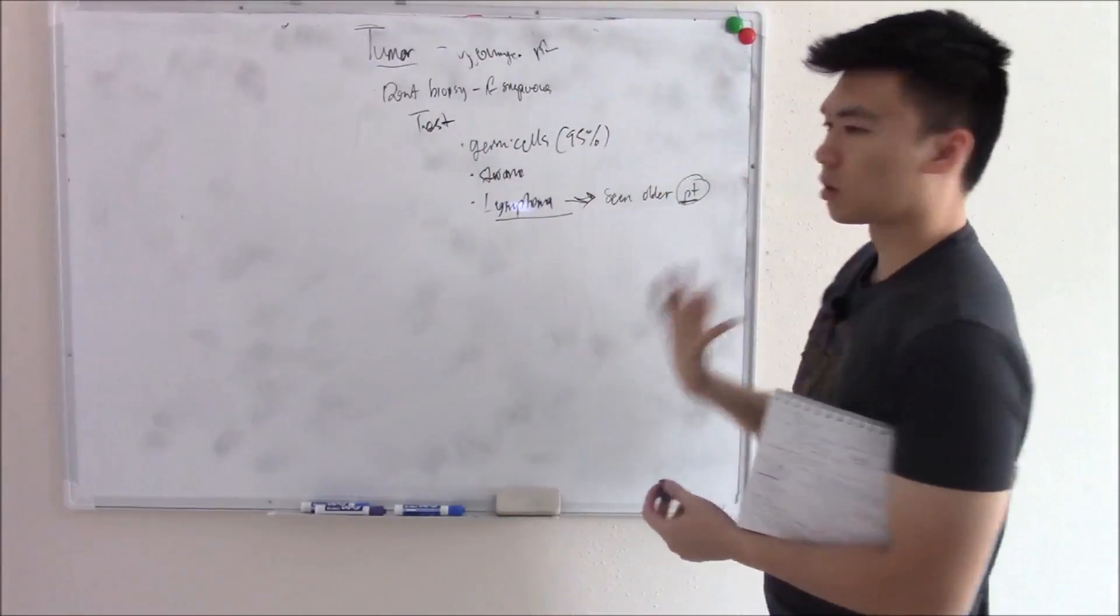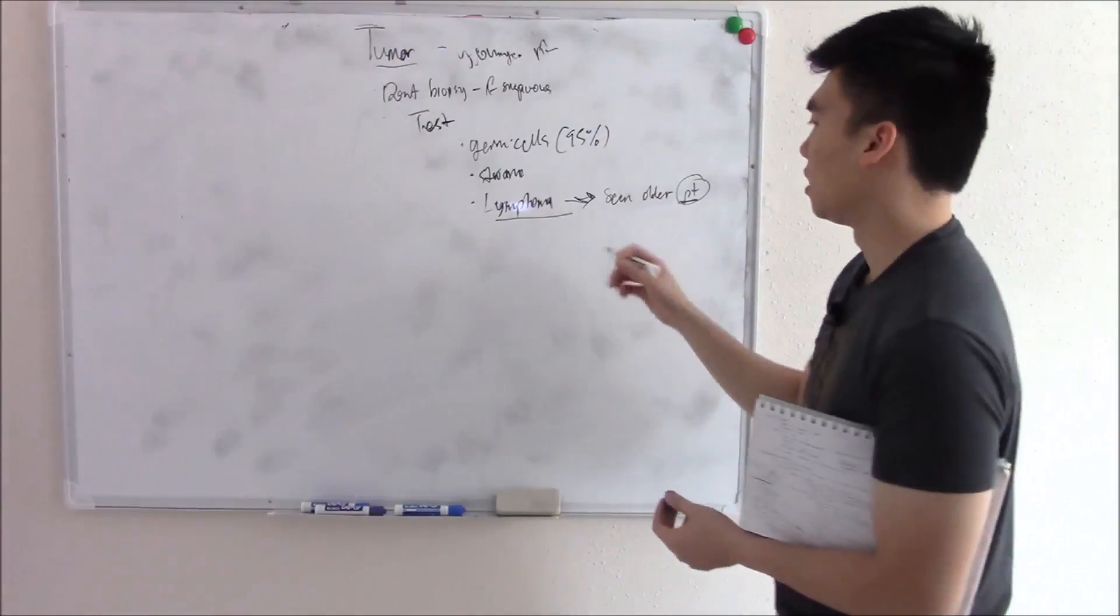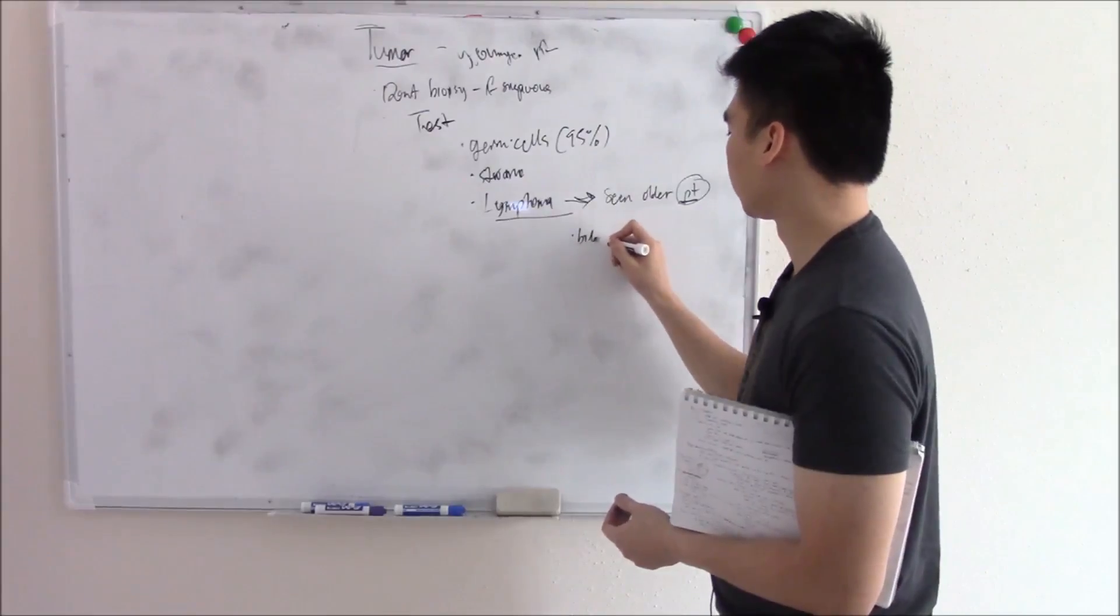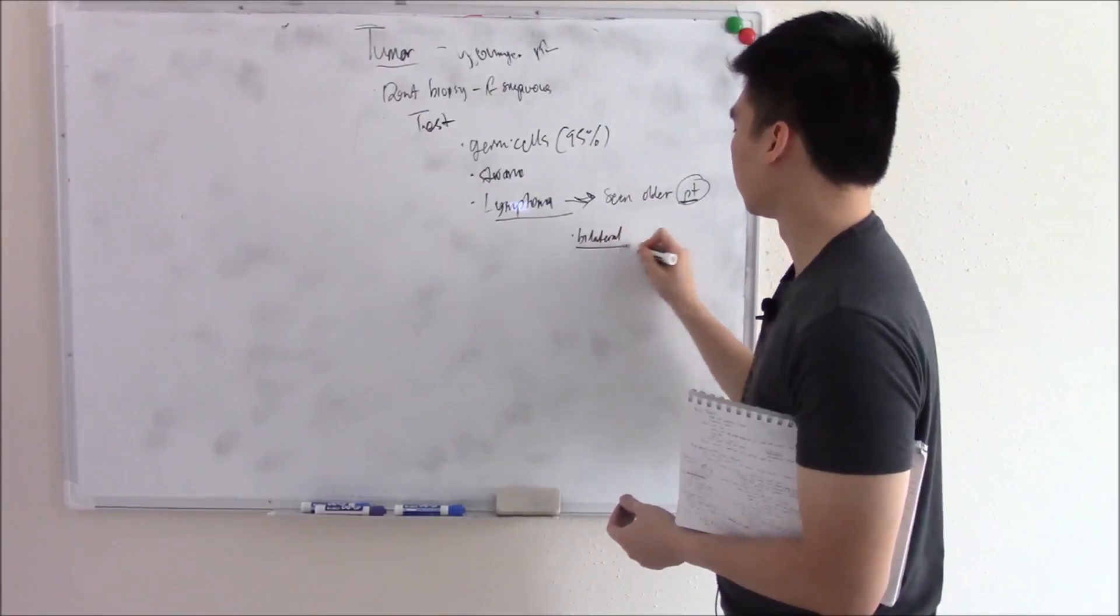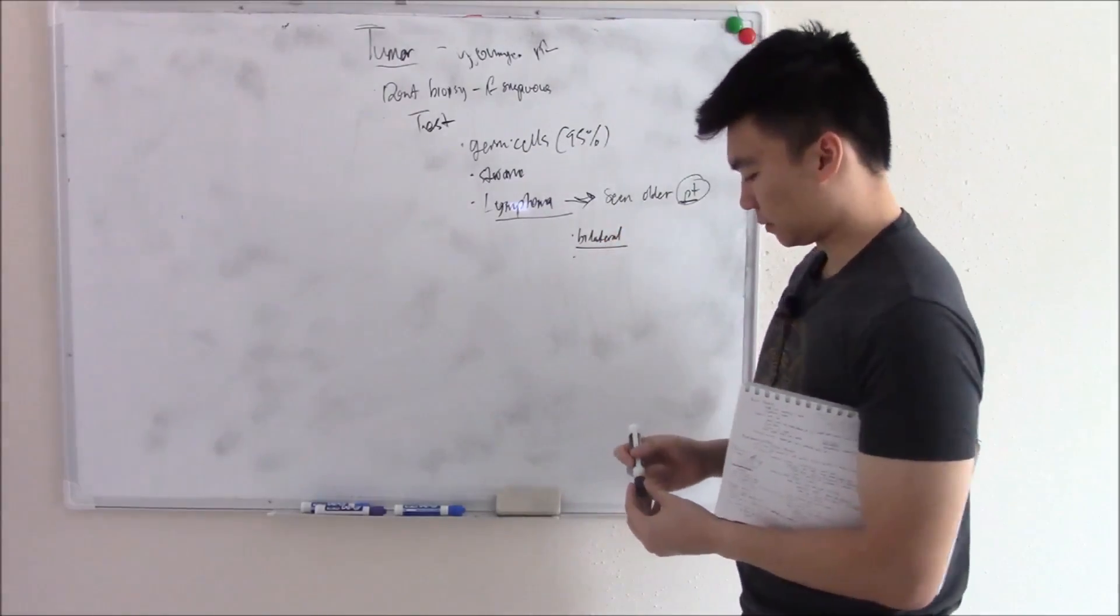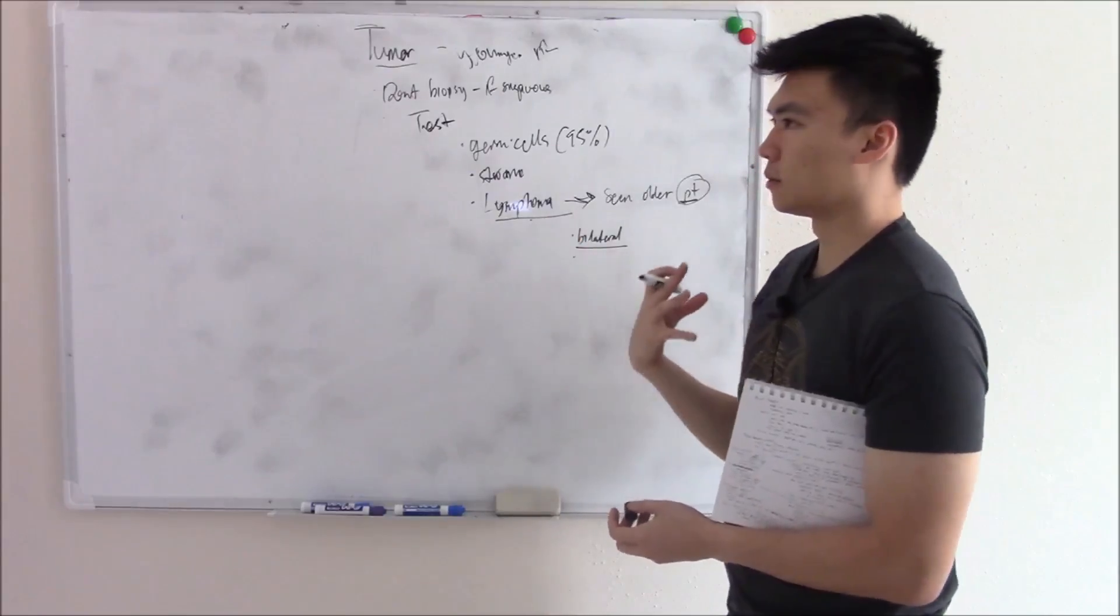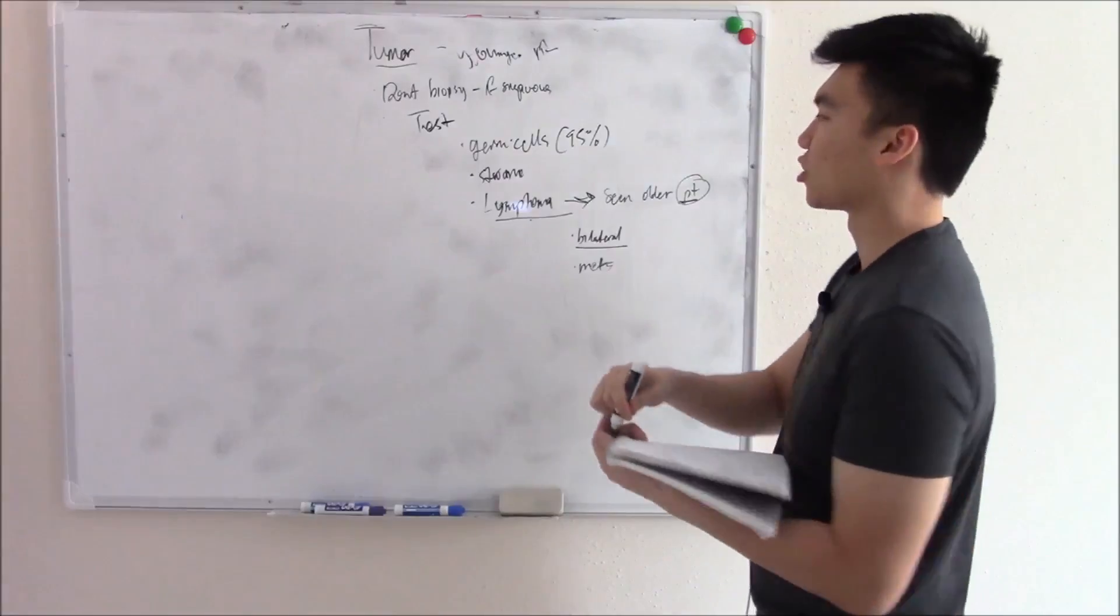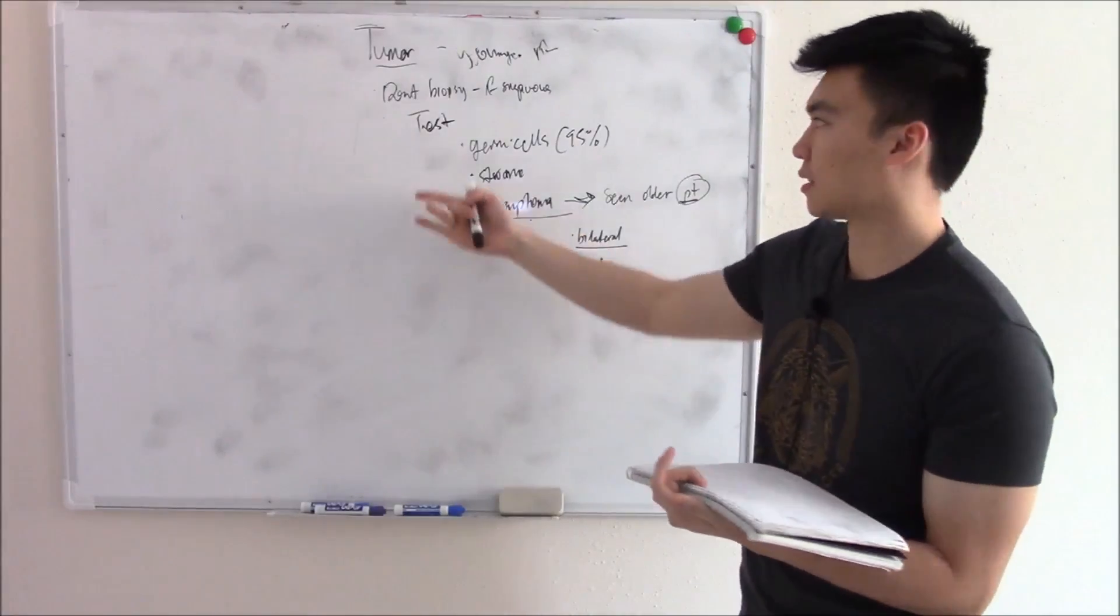So if you see an older patient like 65 and it comes in with a mass, then you're thinking testicular lymphoma, especially if it's bilateral. Now, this lymphoma isn't usually primary. It's usually metastasis.